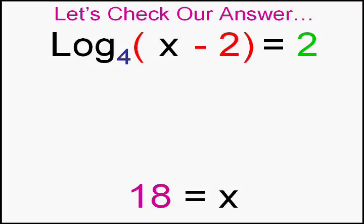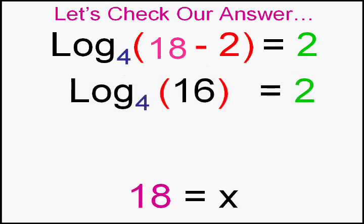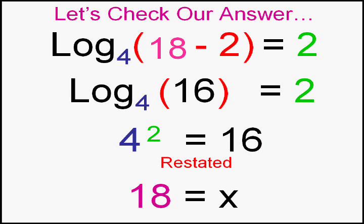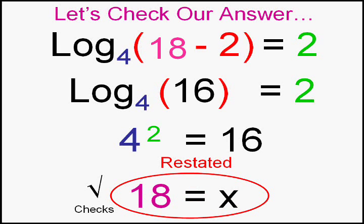Now it's very important—hopefully you learned from the last homework that you have to check your answers because they don't always work. If we take eighteen and put it in, we'll take the log base 4 of 18 minus 2, or 16. The log base 4 of 16 is 2. Well, 4 to the 2nd does equal 16, so it checks.